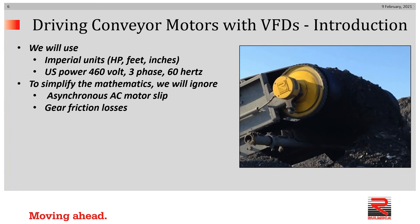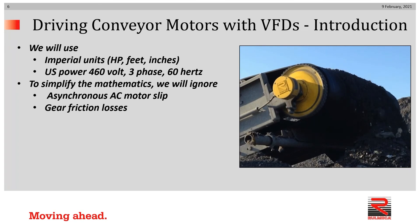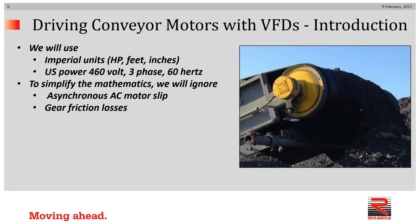Throughout this presentation we'll be using imperial units such as horsepower, feet, inches, and that sort of thing, and we'll be referring to standard US power supply — that is to say, 460 volt three-phase 60 hertz AC power. To simplify the mathematics we're going to ignore asynchronous AC motor slip, which is in the ballpark of about five percent, and gear friction losses, which can also amount to a few percent. We'll ignore both of those to simplify the mathematics.